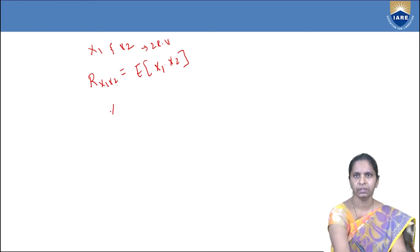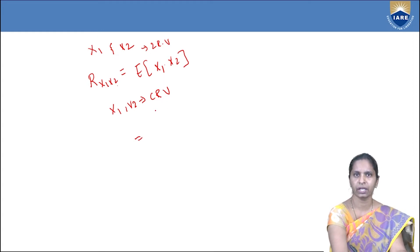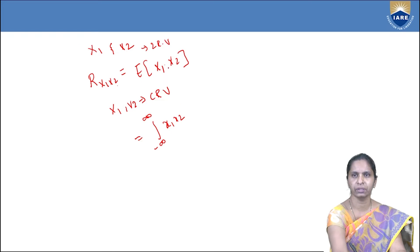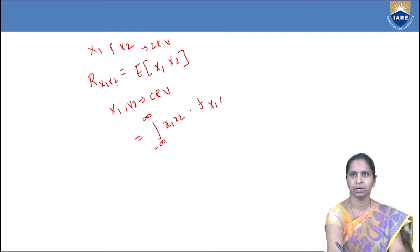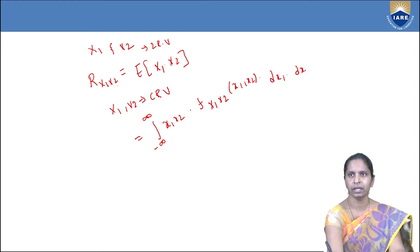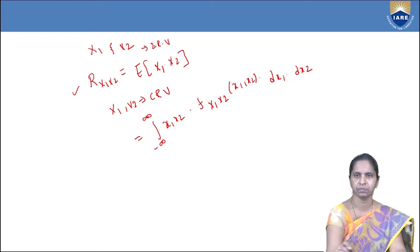If the random variables x1 and x2 are continuous random variables, then how do you calculate the correlation? By the formula of double integration from minus infinity to infinity of x1 * x2. The expectation of any function is written as that function multiplied by the density function — the joint density function — given by f_{x1,x2}(x1, x2) dx1 dx2. This is called the correlation between these two random variables x1 and x2.